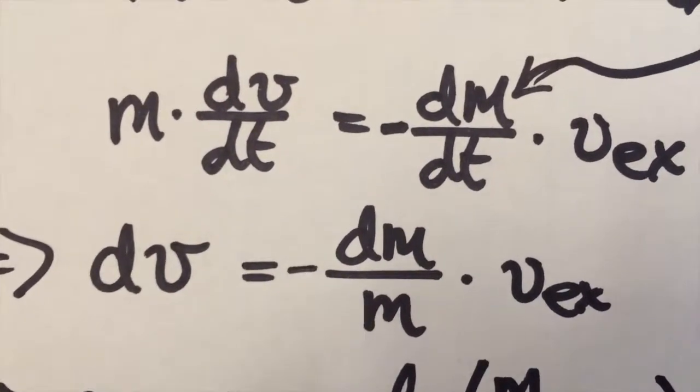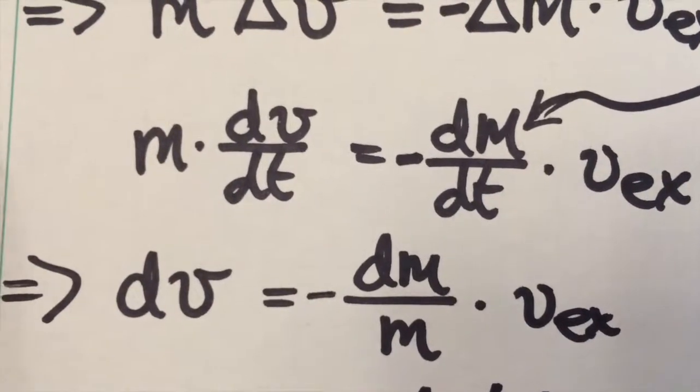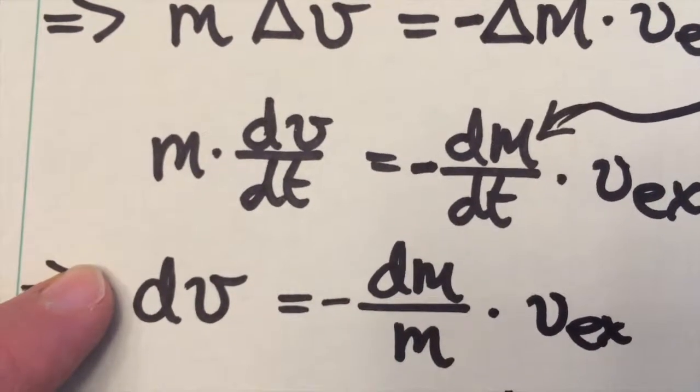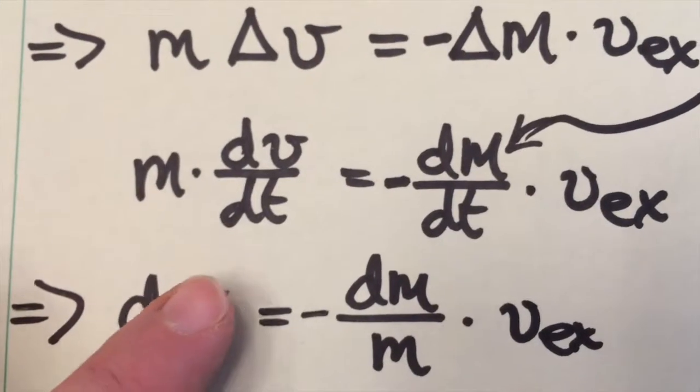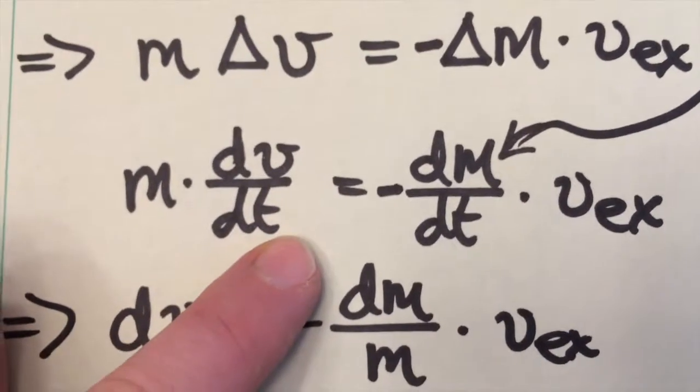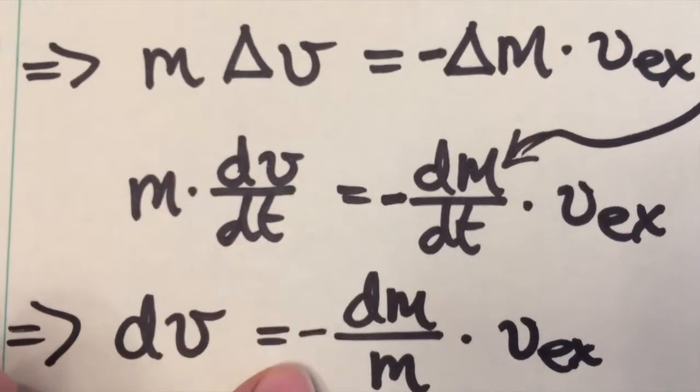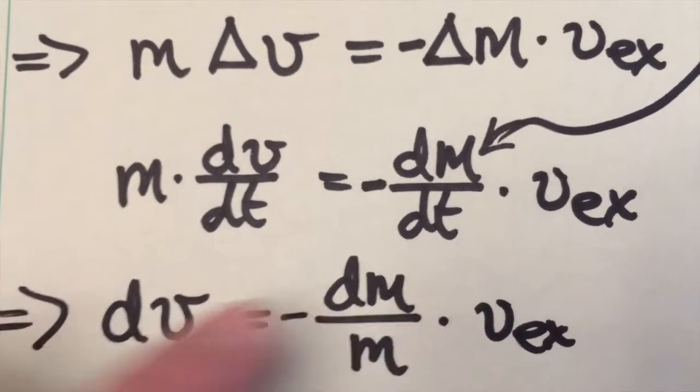In which case we'll get differentials, so these are now infinitesimal quantities. And so we've got dv, some tiny infinitesimal change in the velocity, is equal to negative dm, which remember is negative, divided by the mass of the rocket at any instant, all times the exhaust velocity.